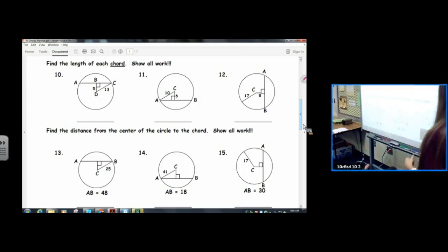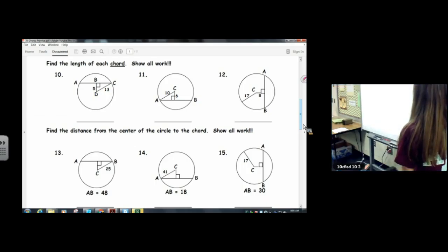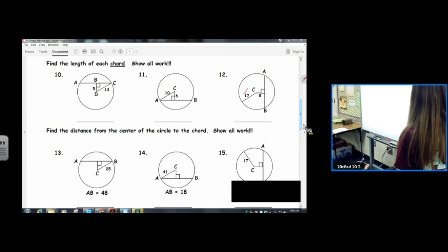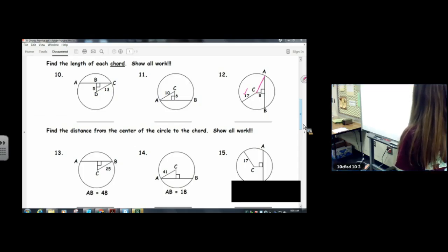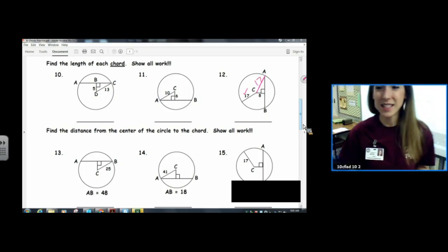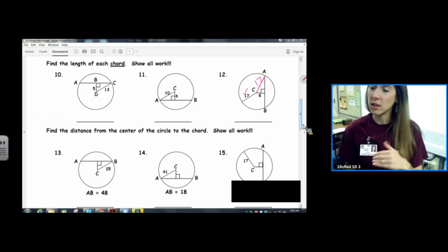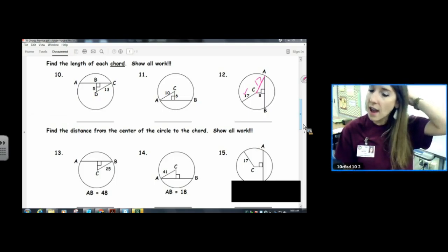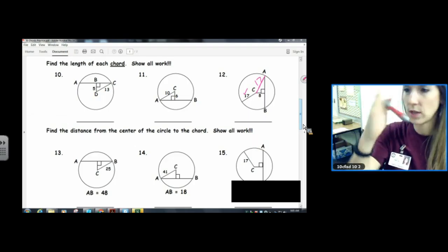So what I notice in this picture is that I have this 17, but it's really doing no good to me over there. I could draw either CA or CB. A radius in a circle is a radius. It's going to stay the same length throughout the whole circle. So I can go ahead and put the 17 at CA. I can rotate it around.